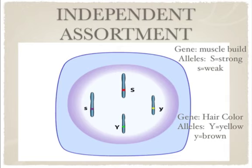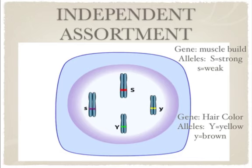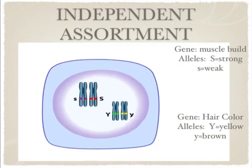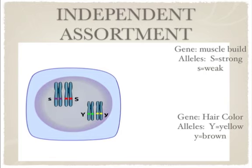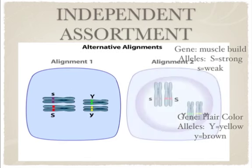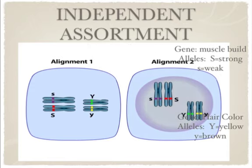We can use a diploid cell with just two pairs of chromosomes to illustrate independent assortment. We will track the movement during meiosis of the cell's two pairs of homologous chromosomes. Before meiosis begins, the cell synthesizes new DNA and thereby replicates each chromosome. Early in meiosis, the pairs associate.